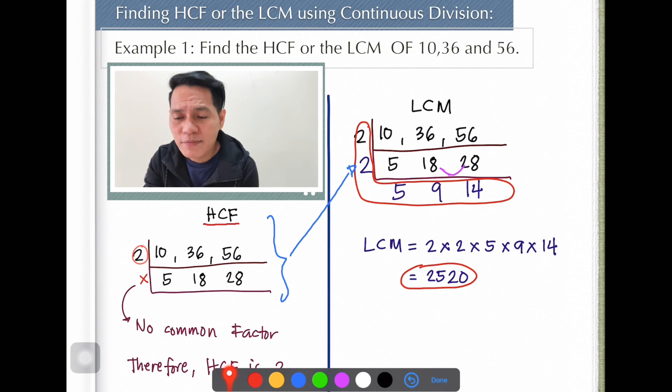And then now let's compare. 5 and 9 doesn't have common. 9 and 14 doesn't have common. 5 and 14 doesn't have a common. So it doesn't have a common factor. So if that's the case, we can stop there and we form letter L.